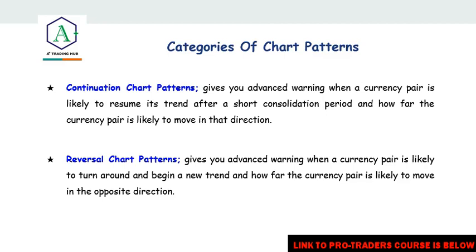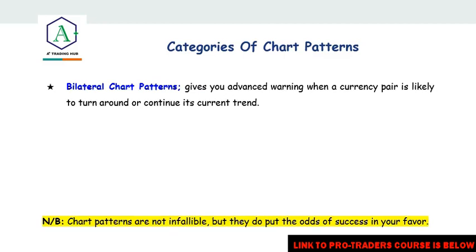For example, if price was in an uptrend and you see a continuation chart pattern, it gives you a clue that price is going to continue. There is also the reversal chart pattern, which gives you an advanced warning when a currency pair is likely to turn around and begin a new trend. These most often happen at key zones — support zones, resistance zones, or supply and demand zones. The bilateral chart patterns give you a warning when a currency pair is likely to either turn around or continue its trend; they are seen in the middle of the chart.